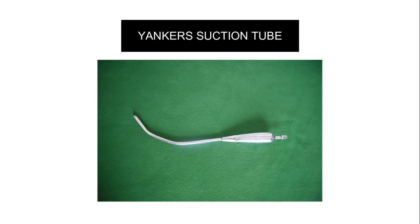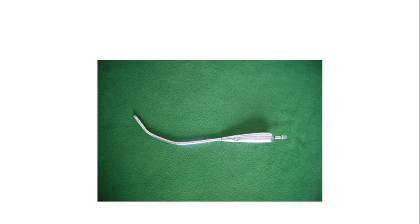This is the Yankauer suction tube. During surgeries like tonsillectomy there can be mucus or bleeding. The tube is bent — not straight — because if you imagine the oral cavity, with the surgery point at the posterior end, a straight tube would obstruct the surgical field. The bent shape keeps it out of the way.